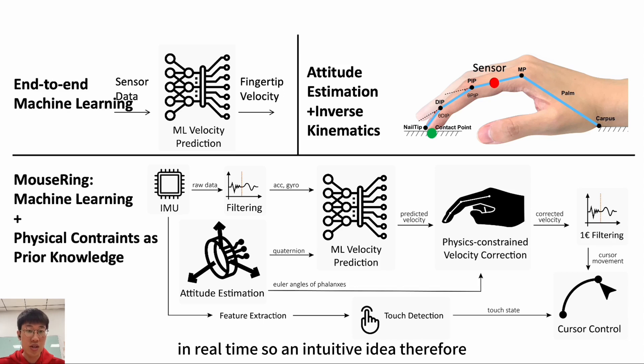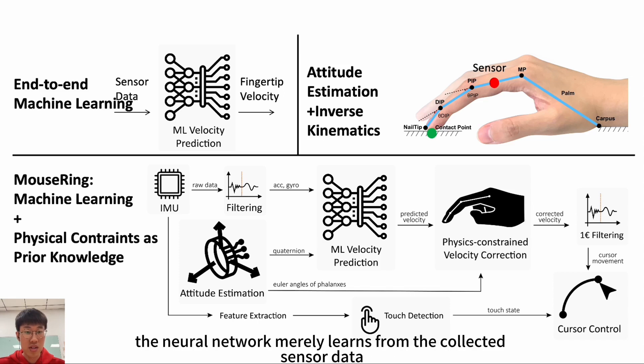So, an intuitive idea, therefore, is to use an end-to-end machine learning method. We input the IMU sensor data into a neural network, and the model directly outputs prediction about fingertip movements. However, due to the high-frequency noise inherited in IMU sensors, instantaneous speed predictions can be unstable, which would prevent MouseRing from providing a robust interaction experience. So, in this framework, the neural network merely learns from the collected sensor data.